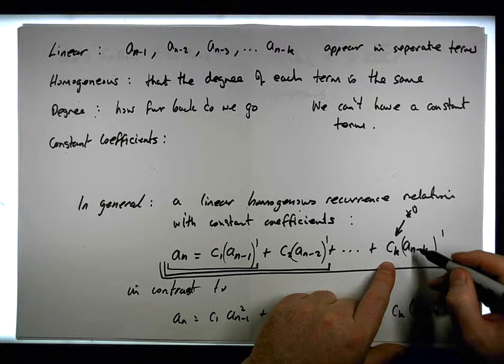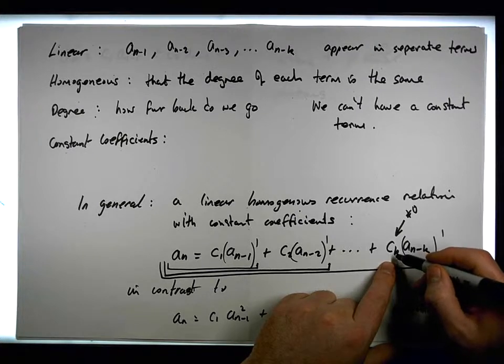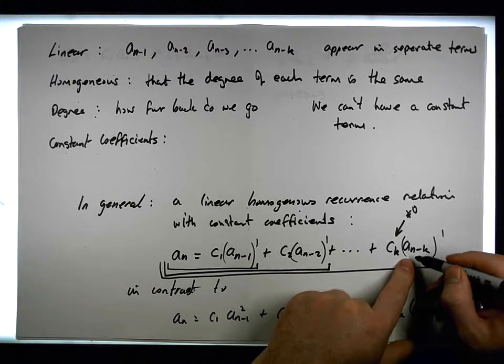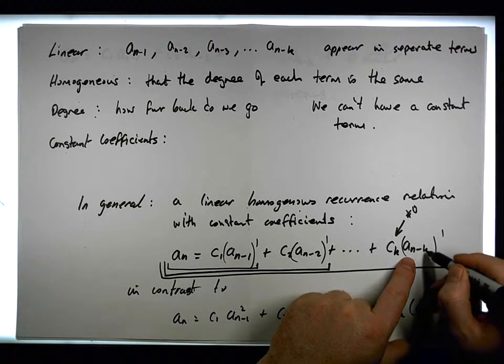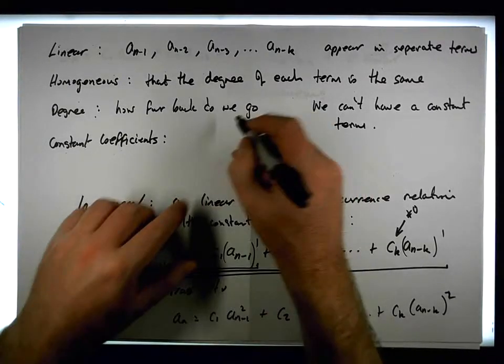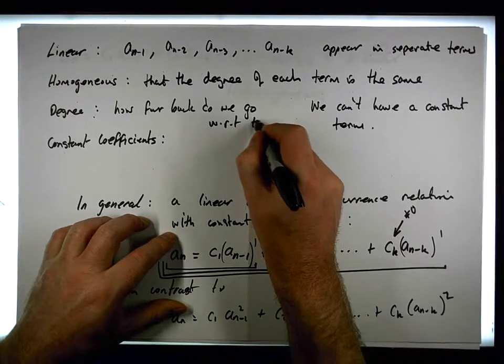And actually, what we'd have is the one before it, which would be c_{k+1} times a_{n-k+1} is the one before that, if that makes sense. So, that's what we mean by the degree, is how far back do we go with respect to terms.